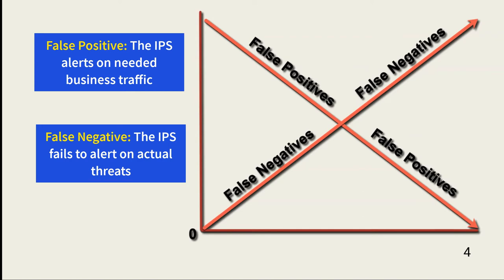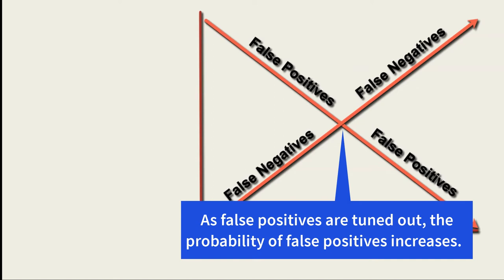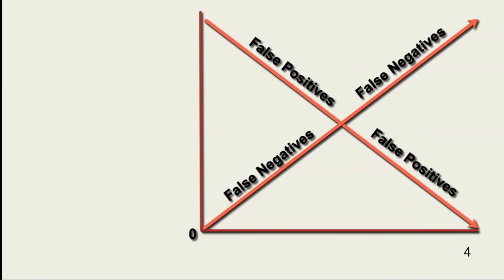It's important to understand that going too far in reducing false positives can also increase the possibility of false negatives. In other words, as we configure the device to ignore various traffic types, we also begin to increase the probability that the device will miss a threat. This is why we place detection devices in various places on the network. For example, the IPS at the perimeter might allow fewer false positives and more false negatives to ensure the quick flow of traffic. The organization would then place IPS or IDS devices at the gateways into highly classified network segments, tightly configured to allow only expected traffic patterns.